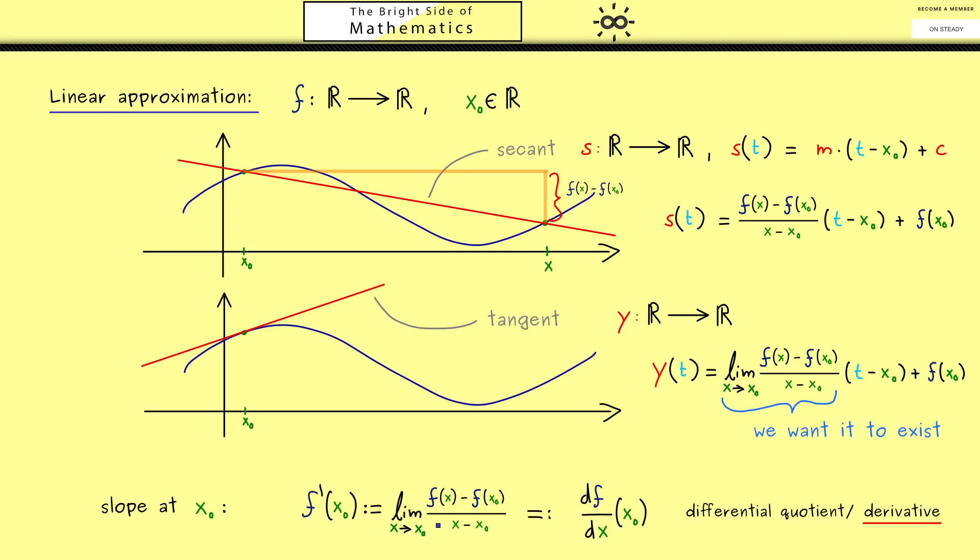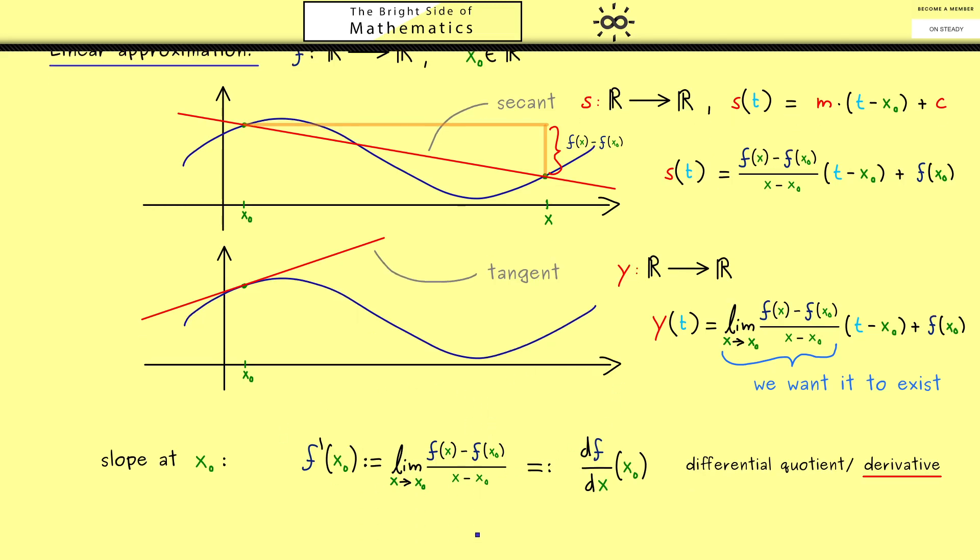However you often see that this whole explanation with the linear approximation is put into the definition. Therefore I also show you now how this is done. So we introduce a function we call delta with index f and x₀. And it is defined with the same domain I.